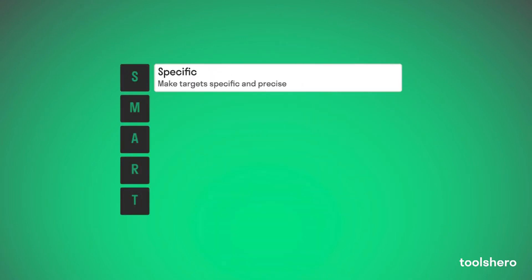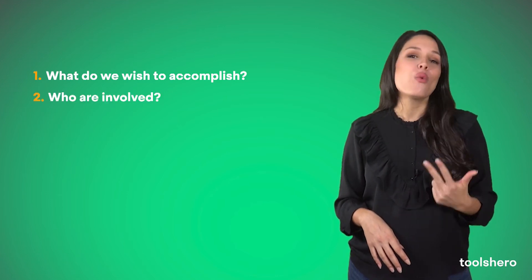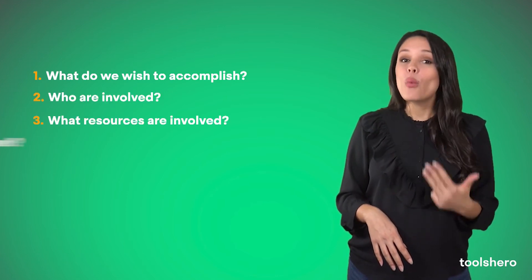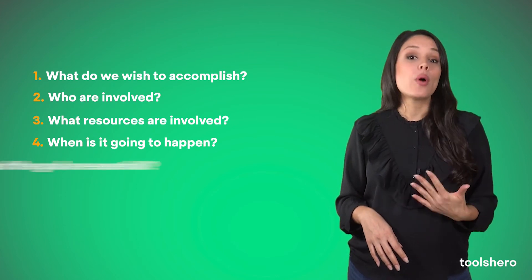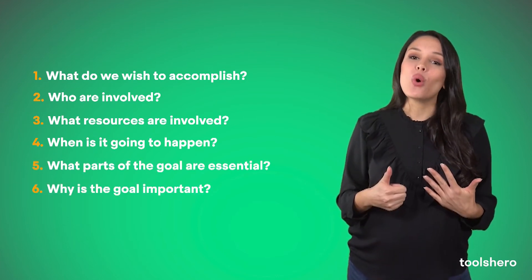The S for Specific makes targets specific and precise. A goal must describe an observable action, behavior, or result. It helps if a value is linked to a number, amount, or percentage. You can make your goals more concrete by answering these 6 questions: What do we wish to accomplish? Who is involved? What resources are involved? When is it going to happen? What parts of the goal are essential? And why is the goal important?